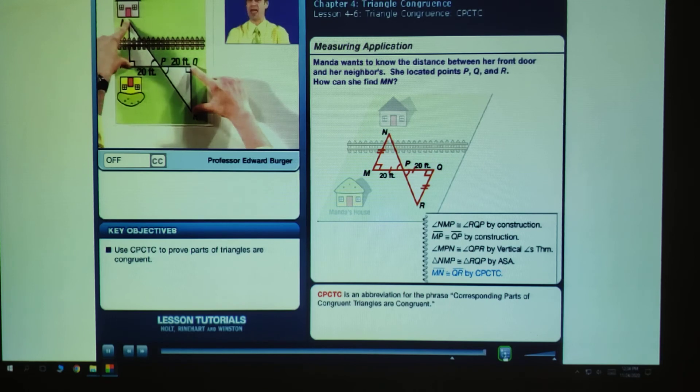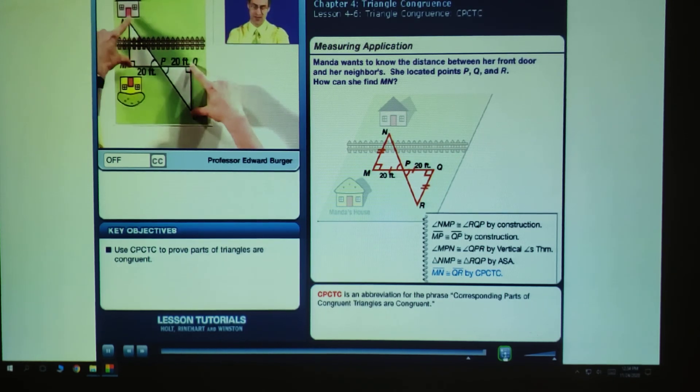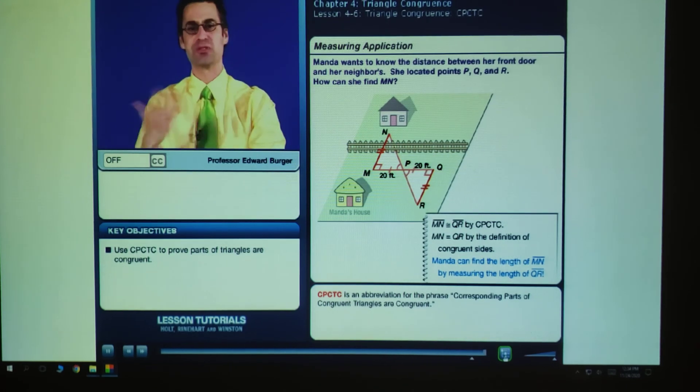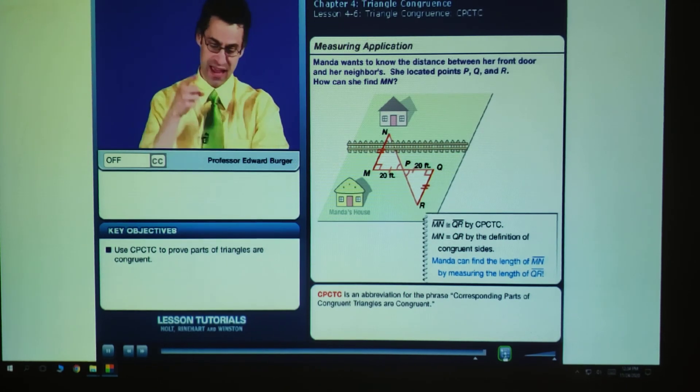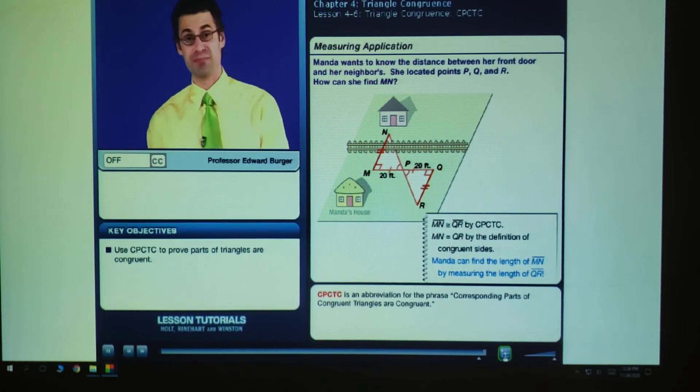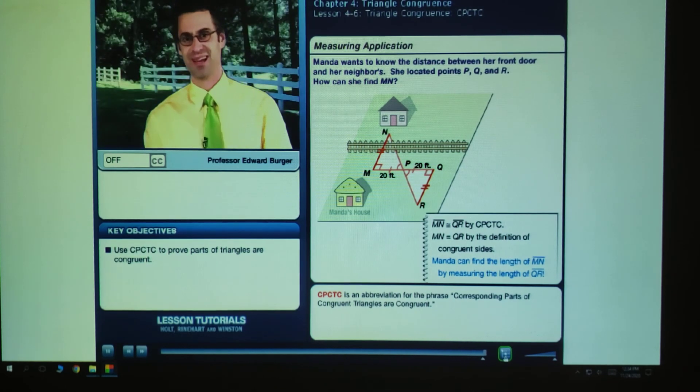So all Manda has to do now is measure this length, which she can easily do since there's no barriers. And that will allow her to know the exact length of this. Isn't that cool? How using abstract geometry allows us to actually do a real world question. You can actually imagine this happening in your own backyard. Have fun.